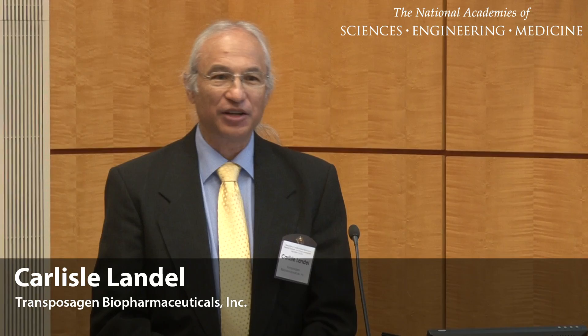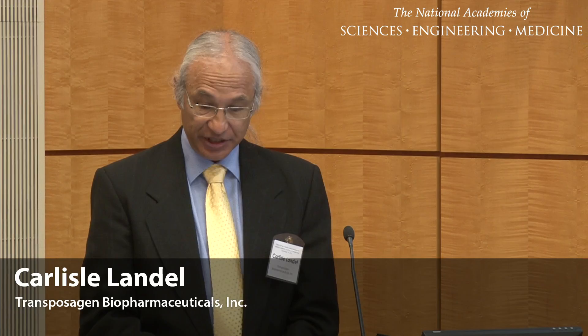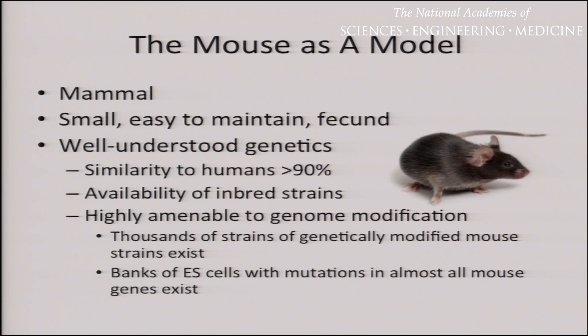Why rodents? Rodents are mammals. We're making these models for everything from asking basic biological questions about how genetics affects a mammalian system, all the way to making models of particular human diseases. The mouse is a mammalian model — it's more like us than zebrafish. Zebrafish are way easier to maintain, but for a mammal, mice are small, easy to maintain, and fecund. You can make lots of mice really fast. More importantly, the genetics are extremely well understood, and since we've done all the genome sequencing, the similarity to humans is well over 90%.